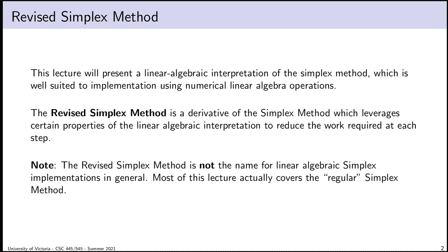The version of the simplex method we've been working with is this dictionary-based algorithm. The description of how it works is algorithmic: you have a dictionary, you perform some operation, you end up in another dictionary, and you keep doing that iteratively until you reach an optimal solution or other terminal situation — unbounded, or you determine the problem is infeasible. What we've noticed over the semester is that there are eerie similarities between the operations on a dictionary and the kinds of things we might do in Gaussian elimination.